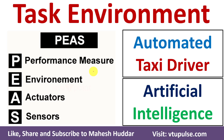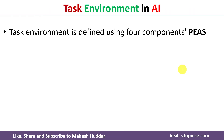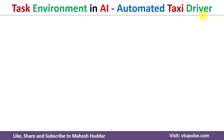Welcome back. In this video, I will discuss task environment in artificial intelligence with the help of a simple example — the automated taxi driver agent. Task environment in artificial intelligence is defined using four components that is PEAS, where P stands for performance, E stands for environment, A stands for actuators, and S stands for sensors. We will understand each of these components with the help of the automated taxi driver.